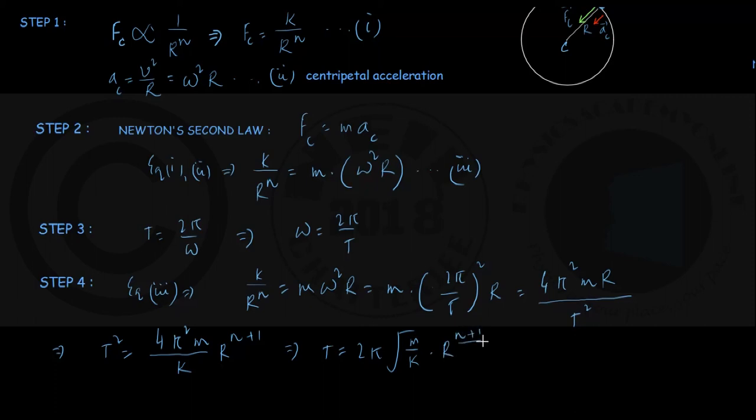See the power here is n plus 1 by 2 of r, and this whole quantity, let me use a different ink, this quantity itself is a constant. Let me call that k dash. I am coming once again: 2π square root of m by k into r to the power n plus 1 by 2.